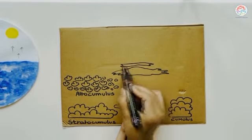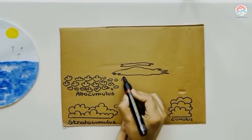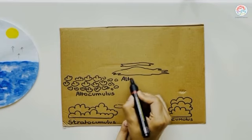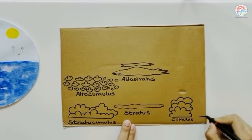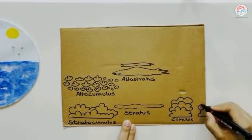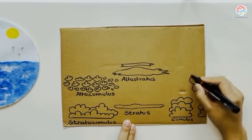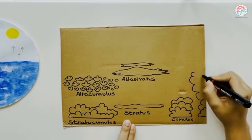Stratocumulus, stratus and cumulus are the clouds found below 6,000 feet of the earth's surface. The altocumulus and altostratus are found between 6,000 to 20,000 feet above the earth's surface.